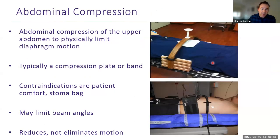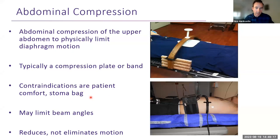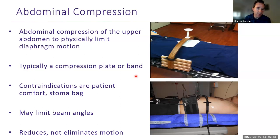One of the simplest ways of doing active motion management is abdominal compression — physically compressing the upper abdomen to limit diaphragm motion. This is typically a compression plate that screws down and compresses the abdomen under the ribs, or a compression band that wraps around the patient and is pumped up to a certain pressure. Contraindications include patient comfort, stoma bags, and sometimes limited beam angles. Abdominal compression reduces motion but doesn't eliminate it, so you still need a measurement of residual respiratory motion with a margin — for example, using a 4D CT.